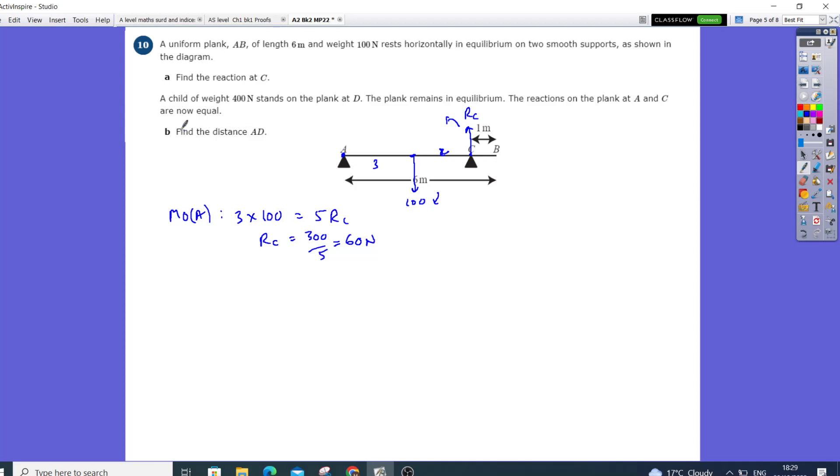Now, the child weighs 400 newtons, stands on the plank at D. Plank remains in equilibrium. The reactions on the plank at A and C are now equal. Find the distance A to D.